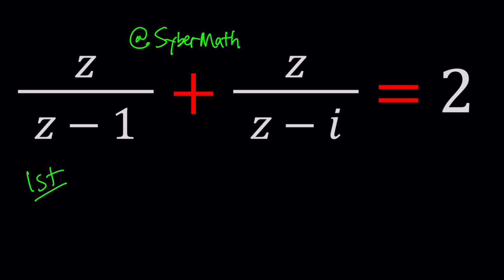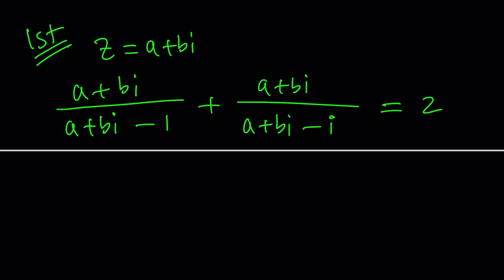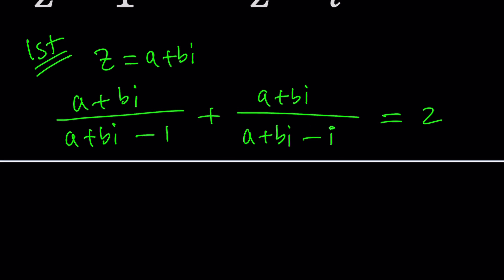First method. Since the name of this channel is A plus B I, why not replace z with A plus B I? That makes sense right? So we get A plus B I in the numerator. In the denominator we get A plus B I minus 1 plus A plus B I divided by A plus B I minus I and this is equal to 2 at the end. Is that possible? Are there any solutions? Let's find out.